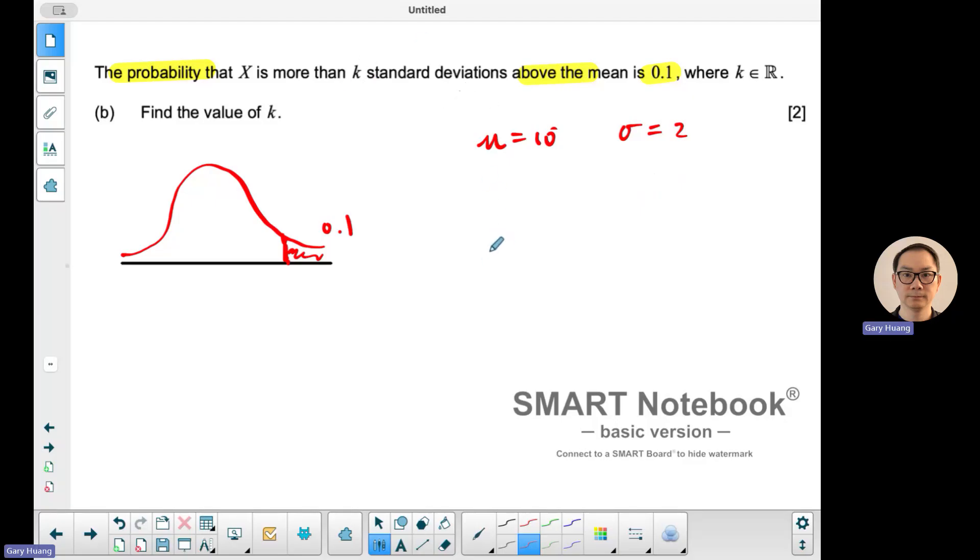The better way to do this is use the z-distribution. Then the mean is 0 and the standard deviation is 1. So inverse normal.